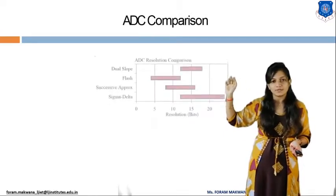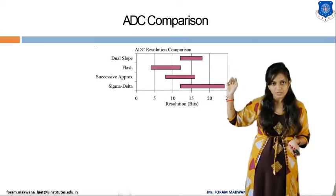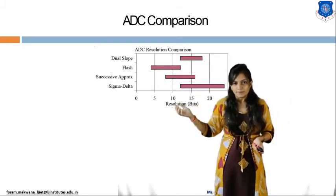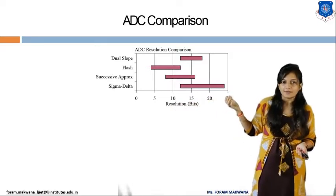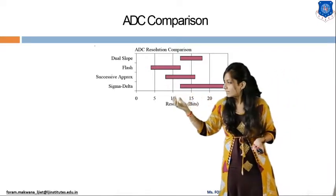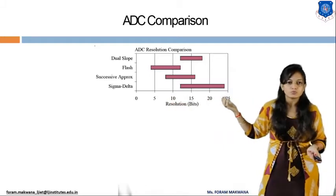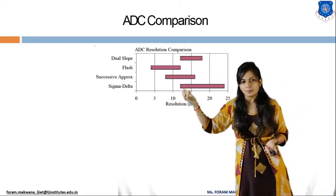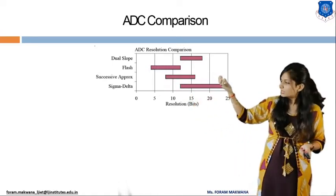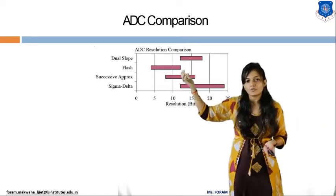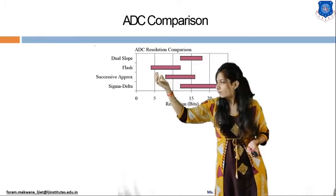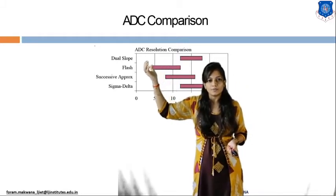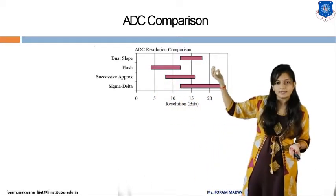Now we compare different ADC types based on resolution. For sigma delta, the resolution is higher, approximately 11 to 23 bits. For successive approximation, it is 8 to 17 bits. For flash type, it is 4 to 13 bits. For dual slope, it is 12 to 18 bits.